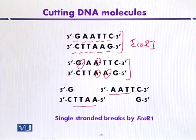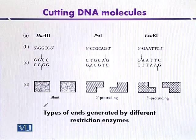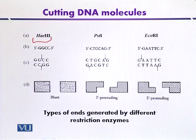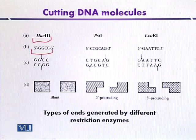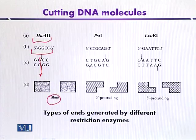This EcoR1 recognition sequence is composed of 6 base pairs. Another example is the enzyme He3, which recognizes a DNA sequence composed of 4 base pairs: GGCC. For convenience, a recognition sequence can be represented by a single strand from 5' to 3'. When He3 cuts the DNA at its recognition site, it produces blunt ends — meaning there are no single-stranded protruding overhangs.